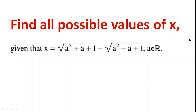Find all possible values of x given that x equals the square root of a squared plus a plus 1, minus the square root of a squared minus a plus 1.